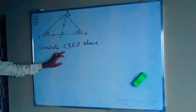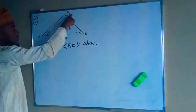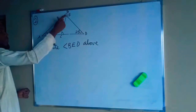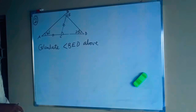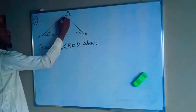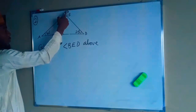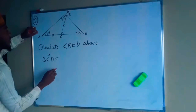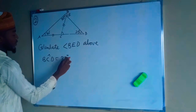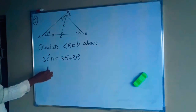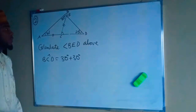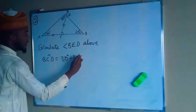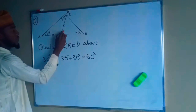Question two asks us to find angle BED. The two marks on triangle ABC show it is an isosceles triangle with equal base angles, so each base angle is 30 degrees. To find angle BCD, since the exterior angle of a triangle equals the sum of the interior opposite angles, BCD = 30 + 30 = 60 degrees.